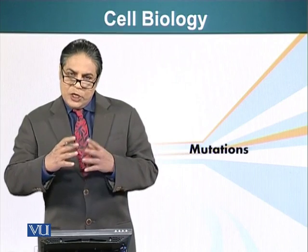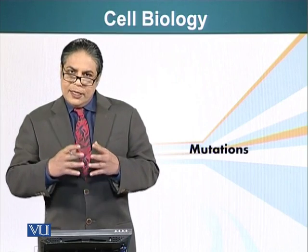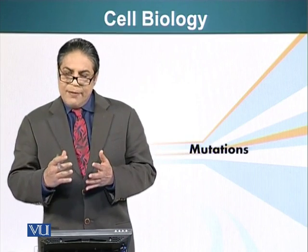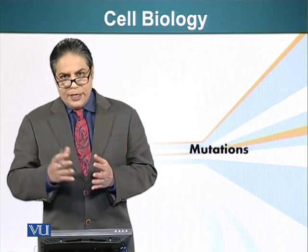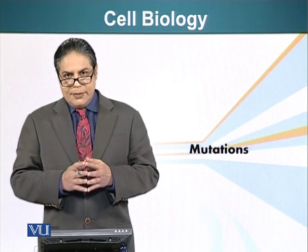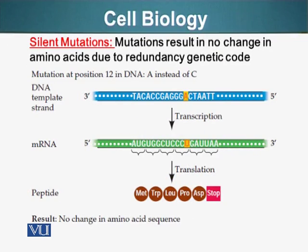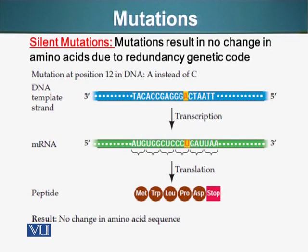Mutations are changes in the genetic material, DNA, which are heritable — passed from one generation to the next. There can be two different types of mutations. One: somatic mutations. These occur in any body cell, any cell of the body that is not ultimately going to form gametes.